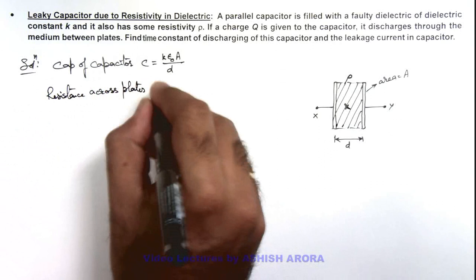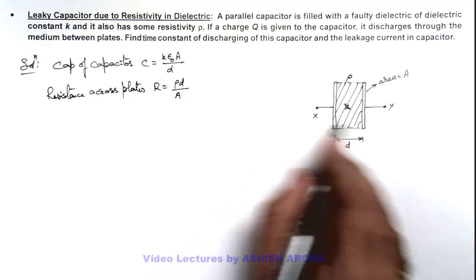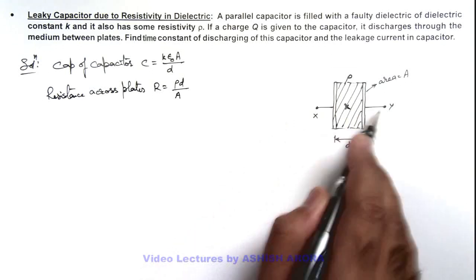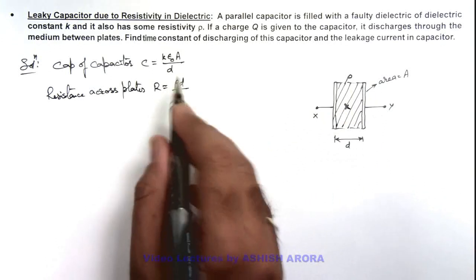This can be written as R equals rho d by A, where d is the path length along which the charge carriers will flow and A is the cross-sectional area of the medium through which it is flowing. So its resistance is rho d by A.